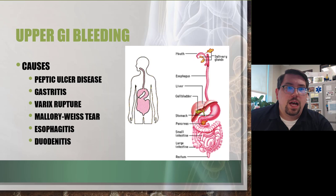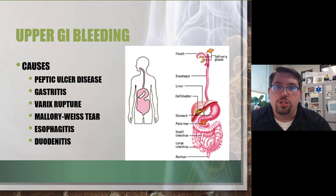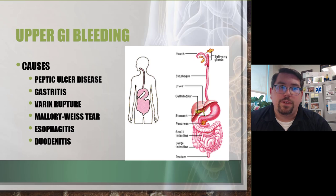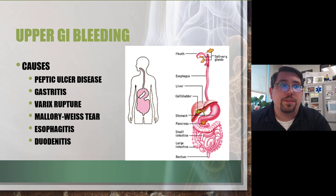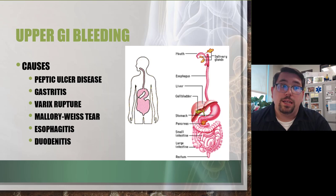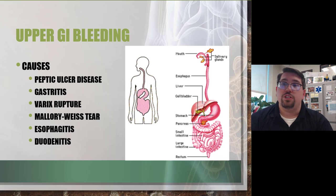Most cases involve irritation or erosion of the gastric lining, causing about 75% of upper GI bleeds. Physicians can manage these on an outpatient basis, but these patients are not going to the doctor. That leads to an acute onset of a life-threatening, difficult-to-control hemorrhage.